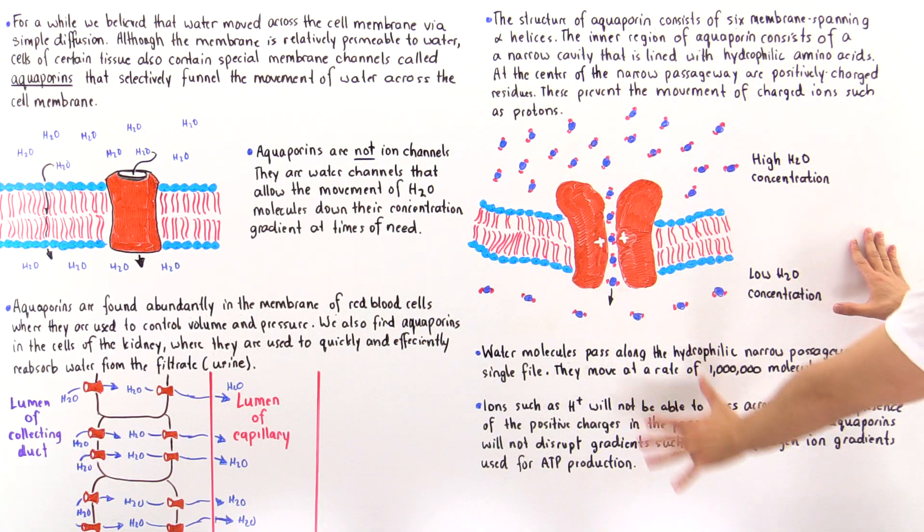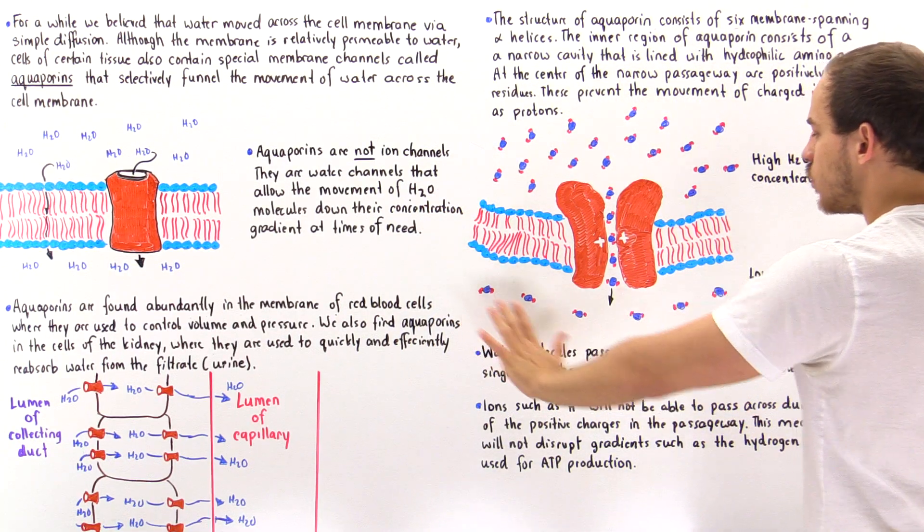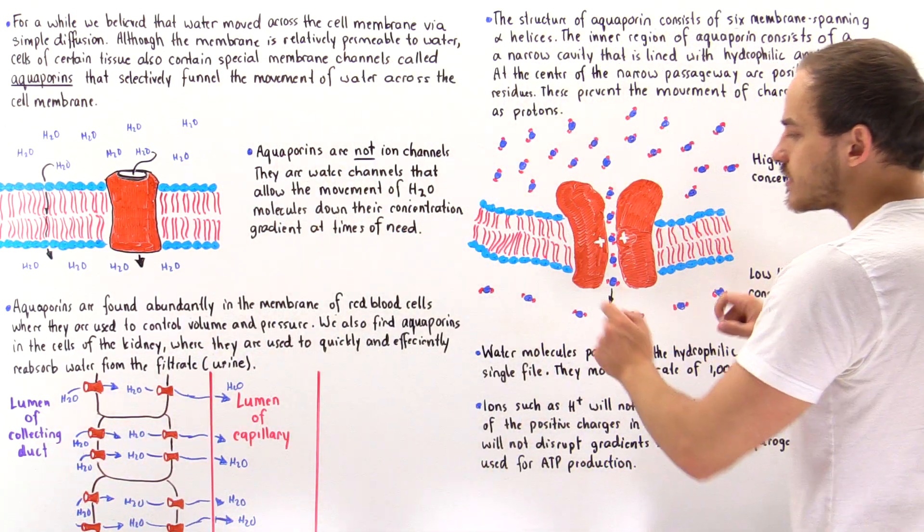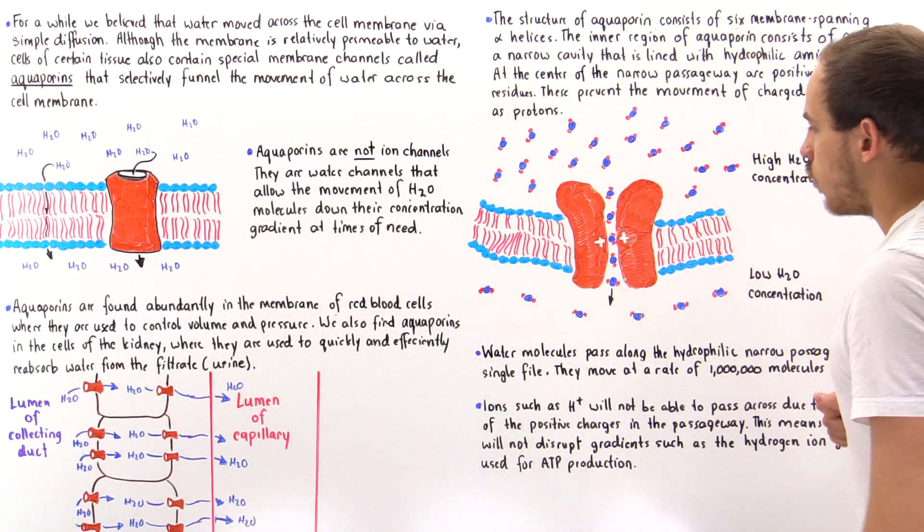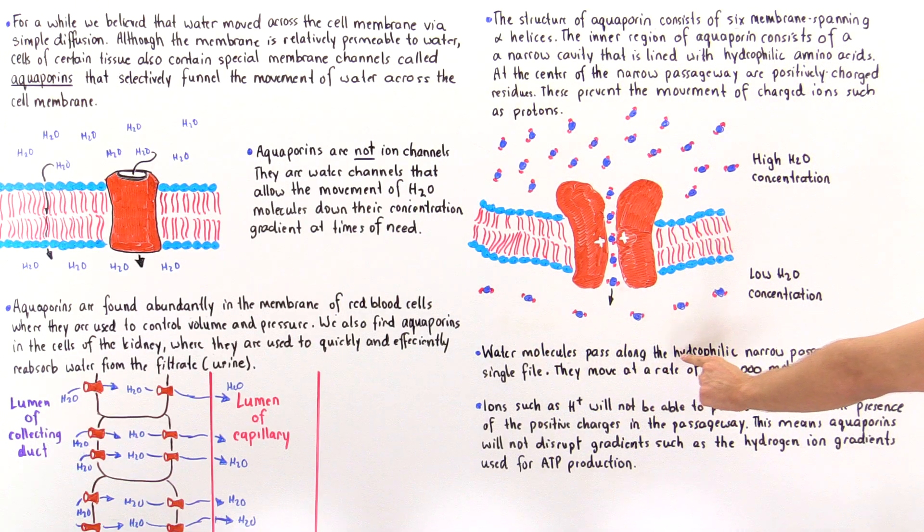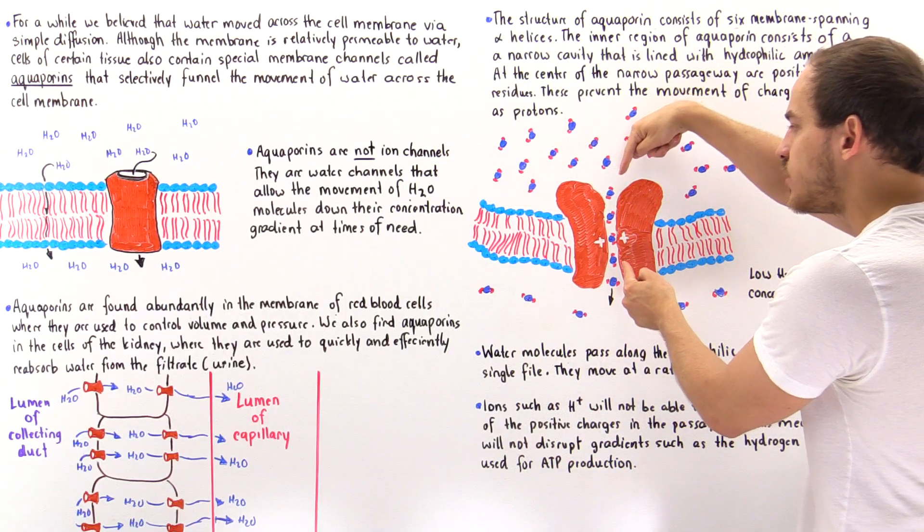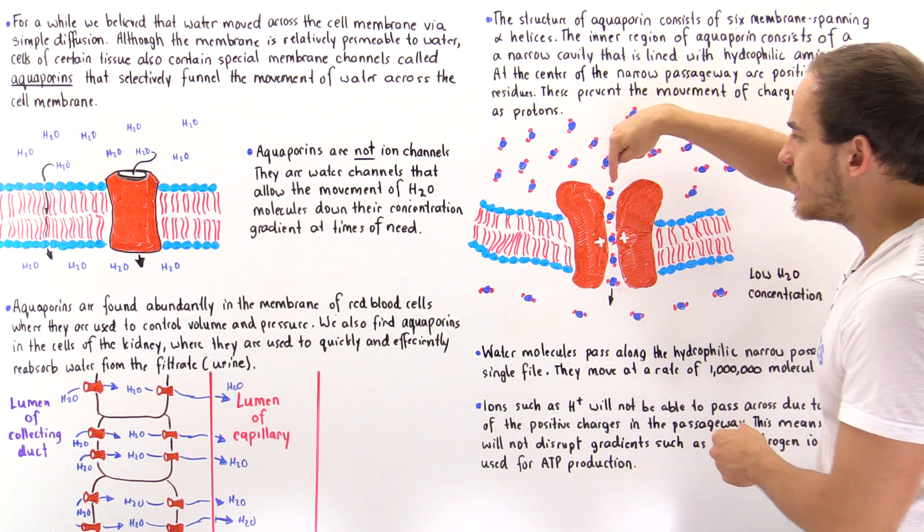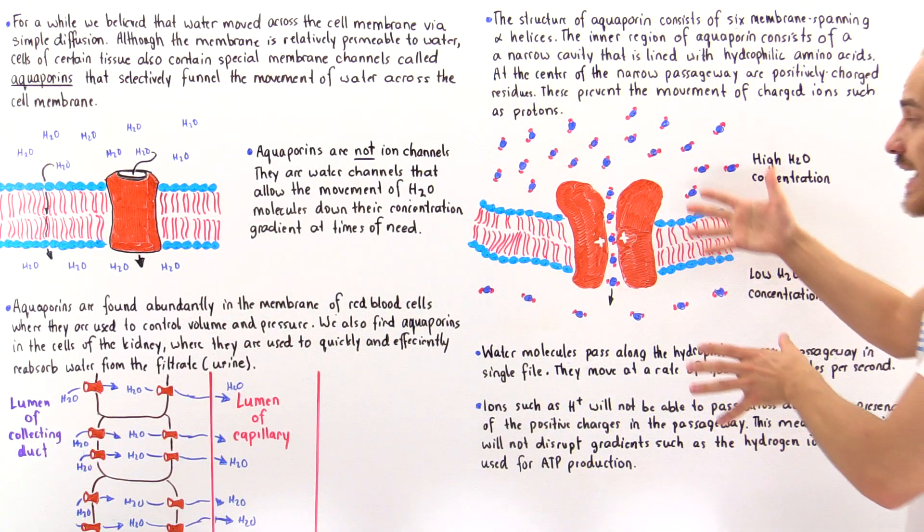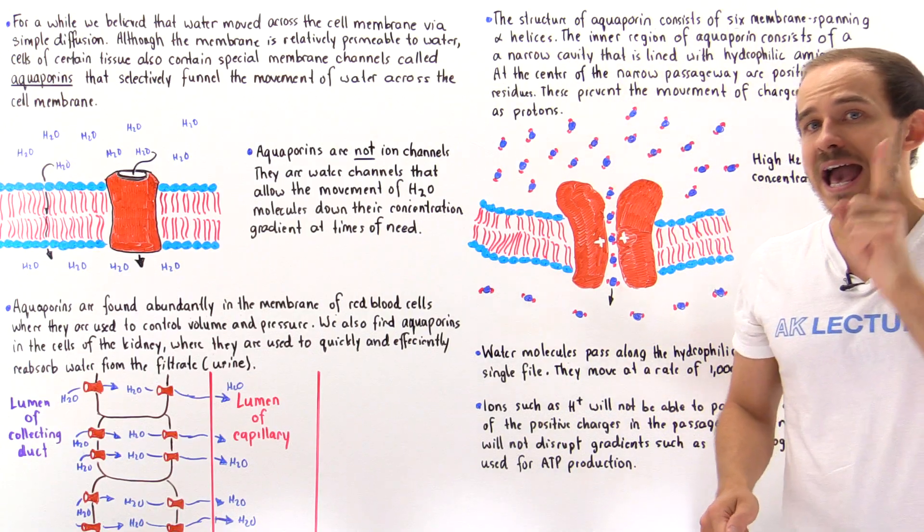This is what a cross-section of the aquaporin would actually look like. We have the cell membrane. We have a high concentration of water here and a low concentration of water here. For instance, we can imagine that this is the lumen of the collecting duct and this is the inside portion of this particular cell. We have this aquaporin with this internal passageway shown here. These water molecules basically pass along that hydrophilic narrow passageway in a single file. This passageway is so narrow that they can only make their way across in a single file. This one bumps this one as a result of electrostatic repulsion, propelling it to move this way. This is so effective and efficient that 1 million of these water molecules move along this channel every single second.